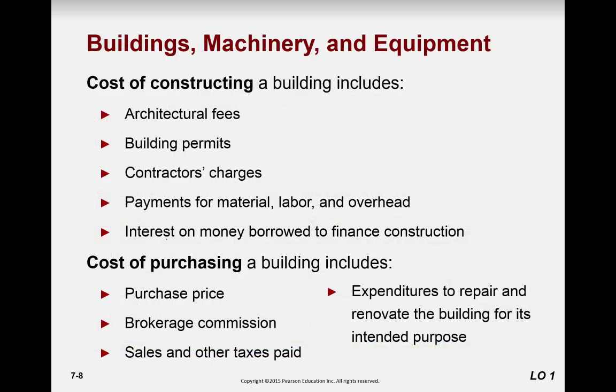Moving on to buildings, machinery, and equipment — the cost of constructing a building includes architectural fees, permits, contractor charges, and payments for material, labor, and overhead. This means direct material, direct labor, and manufacturing overhead associated with erecting the building. Also included is interest on the money borrowed to finance the construction. Students tend to forget this — interest normally isn't capitalizable, but when you take out a construction loan, that interest can be included in the price of the building.